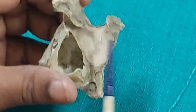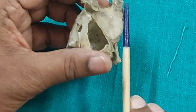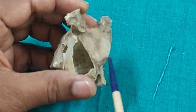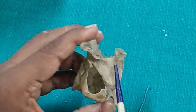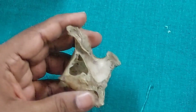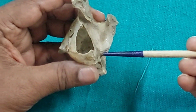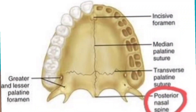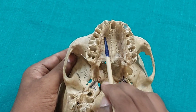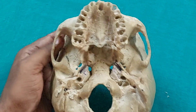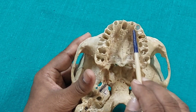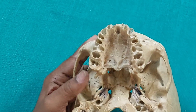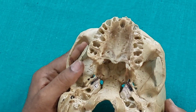The palatine process articulates with the same process of the opposite side, forming three-quarters of the hard palate. This process has a concave upper surface and a lower surface. Its posterior border articulates with the horizontal process of the palatine bone. On the inferior surface there are grooves for the greater palatine vessels and nerves on each side, and anteriorly there is the incisive fossa and incisive canal. The area anterior to the incisive canal is called the pre-maxilla.